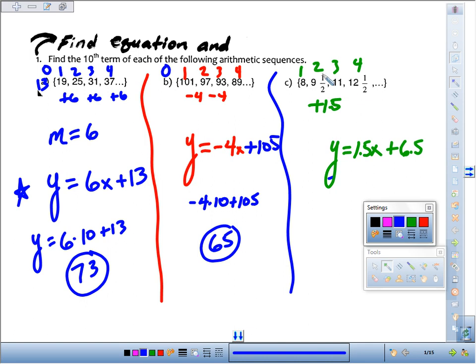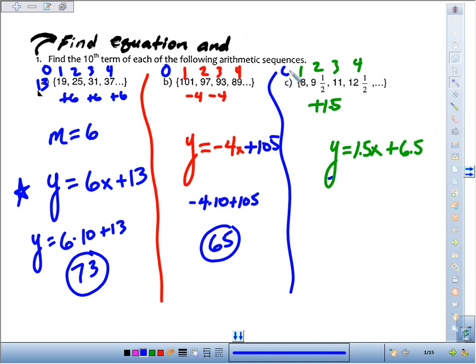Or, if you think about it working backwards, the y-intercept is the zeroth term. Work backwards. Minus 1 1/2, minus 1 1/2. 8 minus 1 1/2 is that 6 1/2.